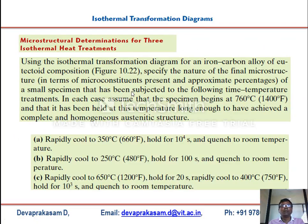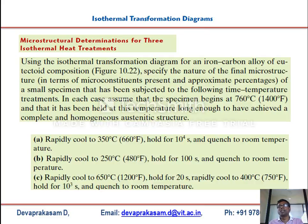Now let us look at a numerical problem: how to draw and understand transformations using the isothermal transformation diagram. The problem uses an iron–carbon alloy of eutectoid composition. Specify the final microstructure of a specimen subjected to various time–temperature treatments, where each specimen begins at 760°C and is held long enough to achieve a completely homogeneous austenite structure.